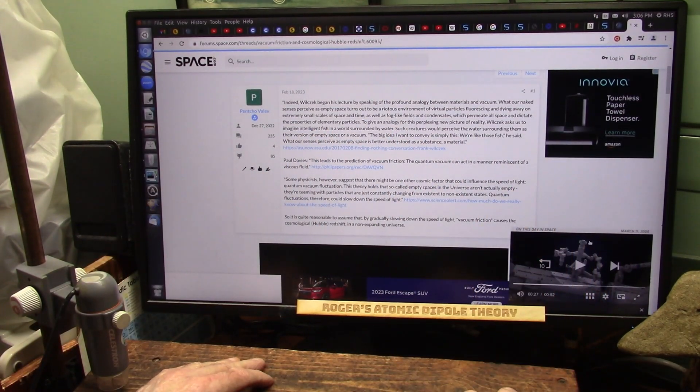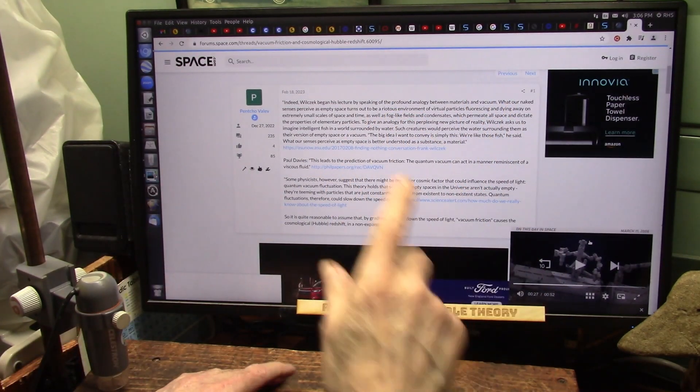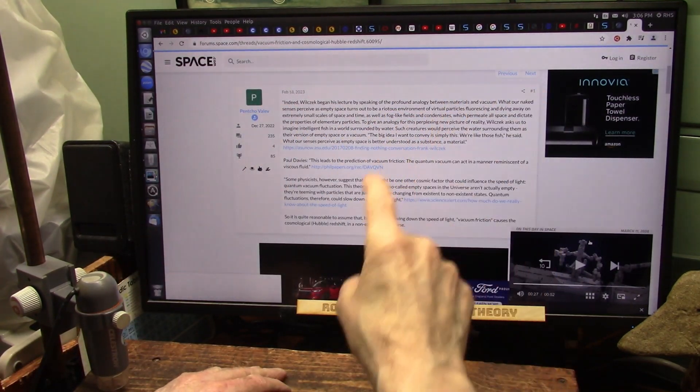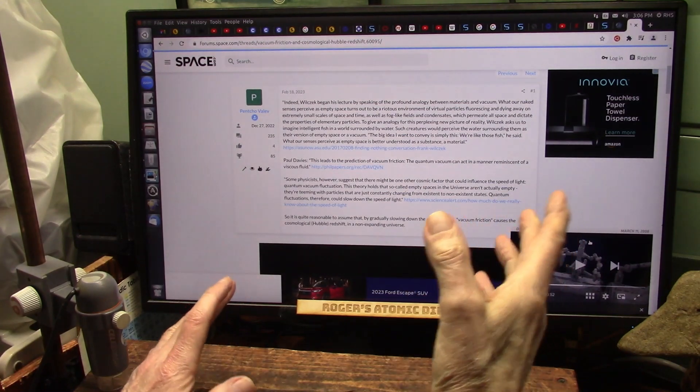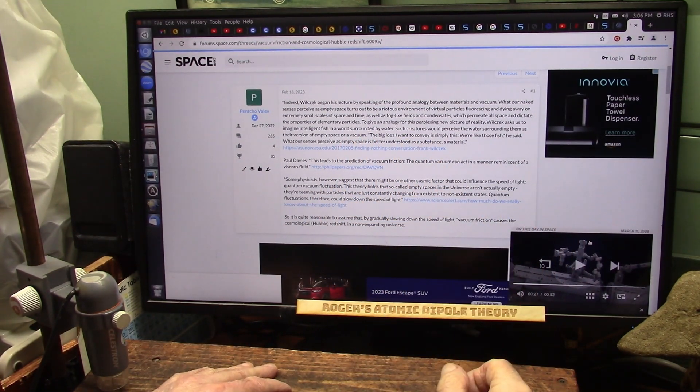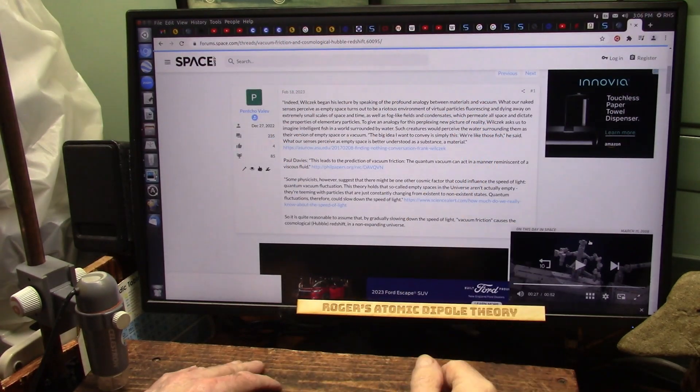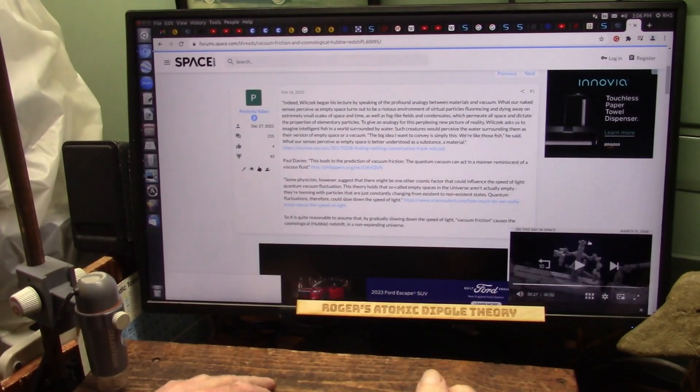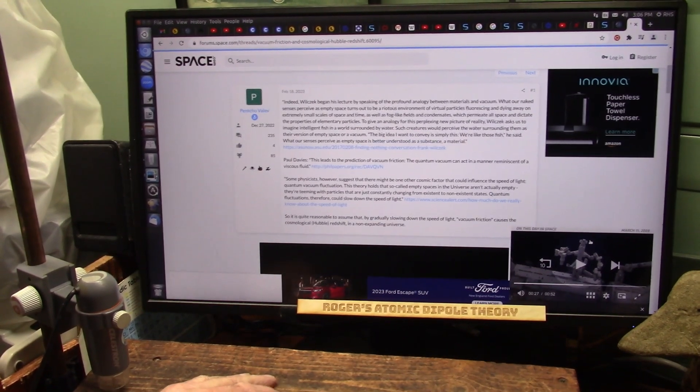Nobody knows whether we're expanding or not. But no matter where you look, light is slowing down. It's redshifting. So, that would mean we are the center of the universe, if this was correct, the redshift. Because no matter where you look, it's slowing down, obviously, because it's coming down and slowing down as it comes to us. And I'll show you why it slows down.